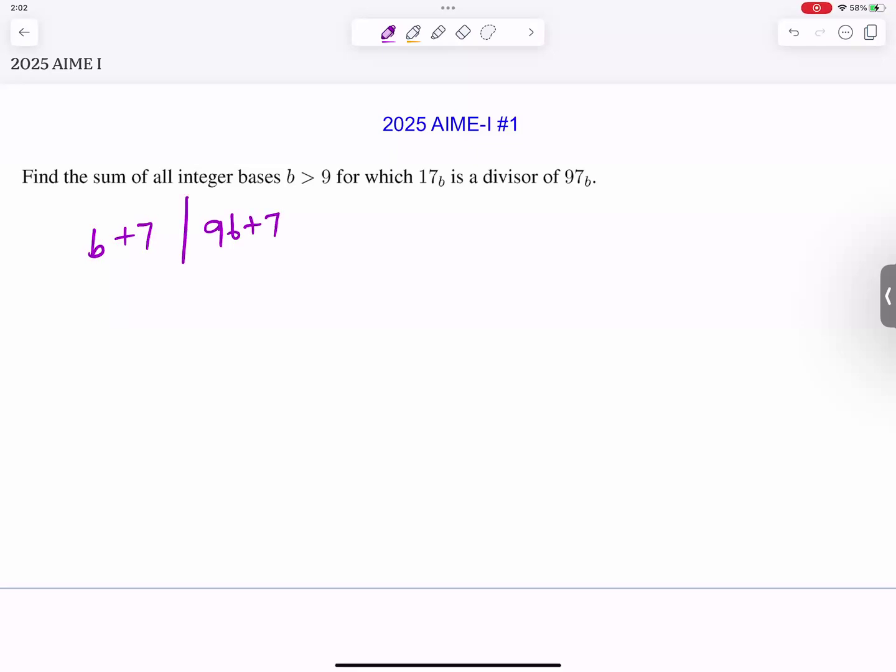We want b plus 7 to divide 9b plus 7. I'm going to use modular arithmetic with modular b plus 7 and let's check b in this modular. b plus 7 is 0 in this modular, so b is negative 7.